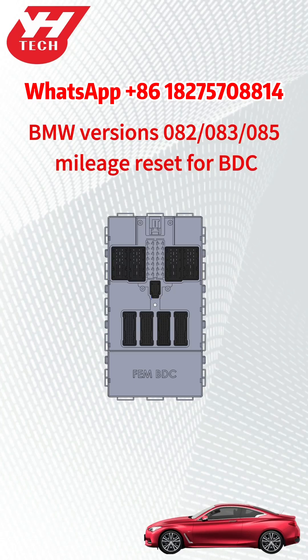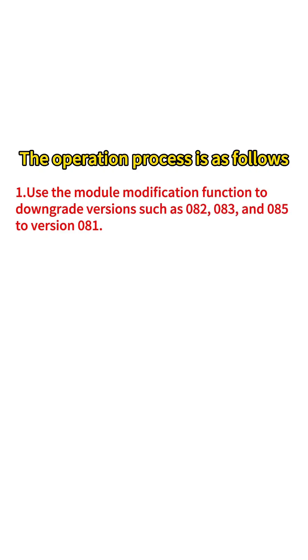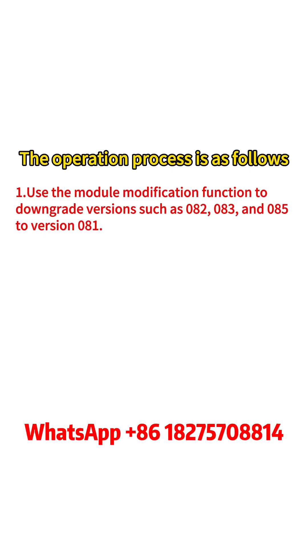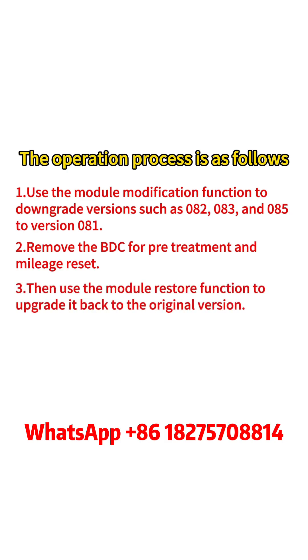Using ACDP, reset the BDC mileage in BMW versions 082, 083, or 085. The operation process is as follows: first, use the module modification function to downgrade versions 082, 083, or 085 to version 081. Then remove the BDC for pre-treatment and mileage reset.